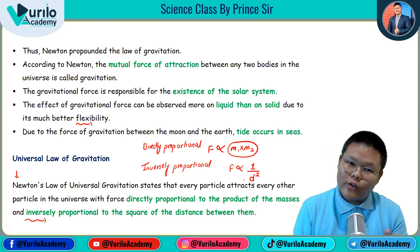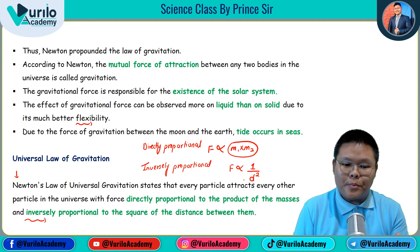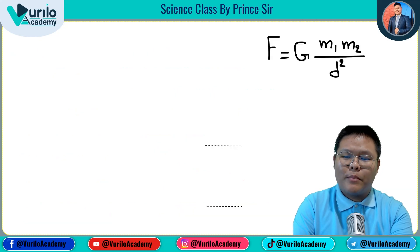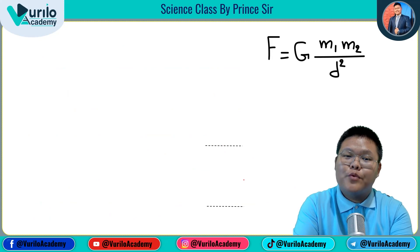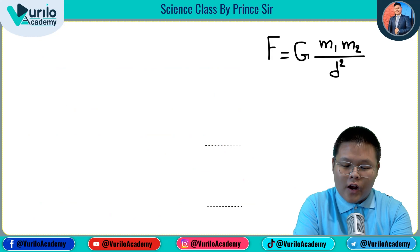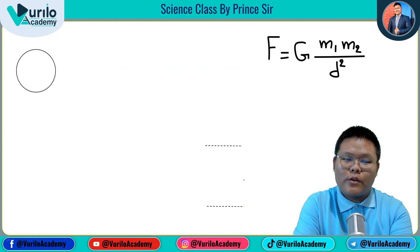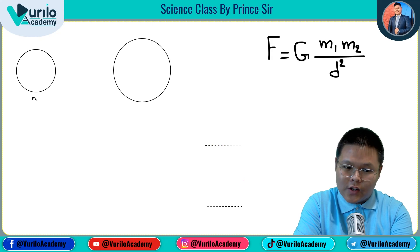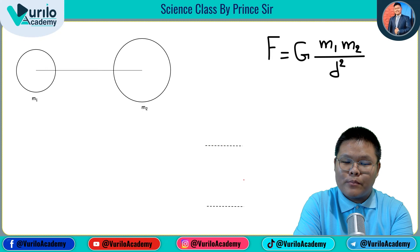Combining directly proportional and inversely proportional, we get the formula: F = Gm₁m₂ / d². This formula needs to be derived — the exam can ask you to prove it. Let us do that carefully now.